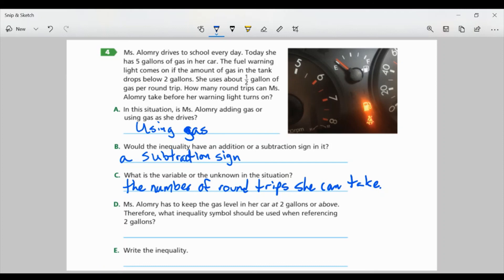Part D. Ms. Alomri has to keep the gas level in her car at two gallons or above. Therefore, what inequality symbol should be used when referencing two gallons? Well, it has to be or above. Above two gallons. So that's greater than. And it says it has to be at two gallons or above. So, or equal to, because it could be equal to two gallons. So, we want it greater than two or equal to two.